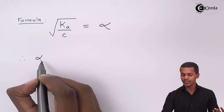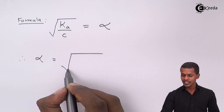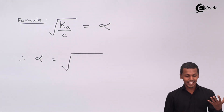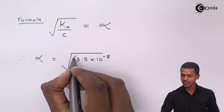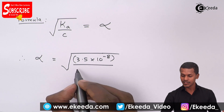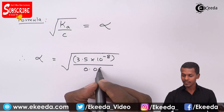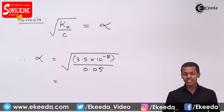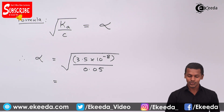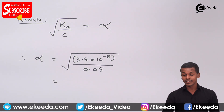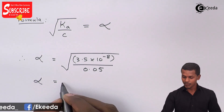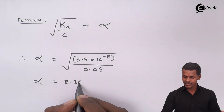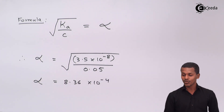We substitute the values: the dissociation constant Ka is 3.5 × 10⁻⁸, and the concentration C is 0.05 molar. The degree of dissociation, alpha (α), comes out to be 8.36 × 10⁻⁴.